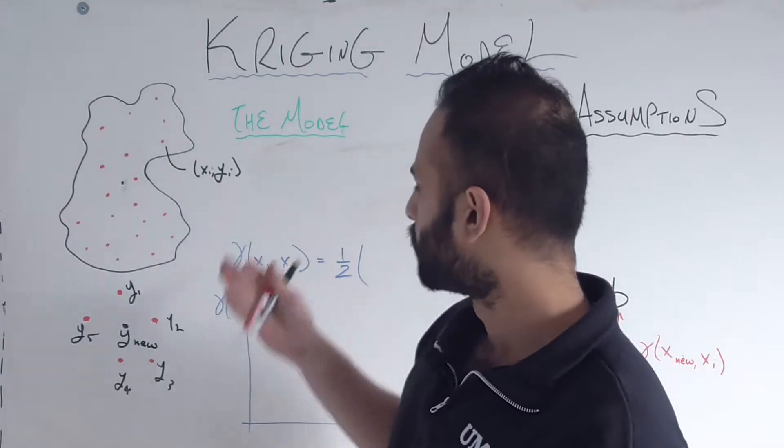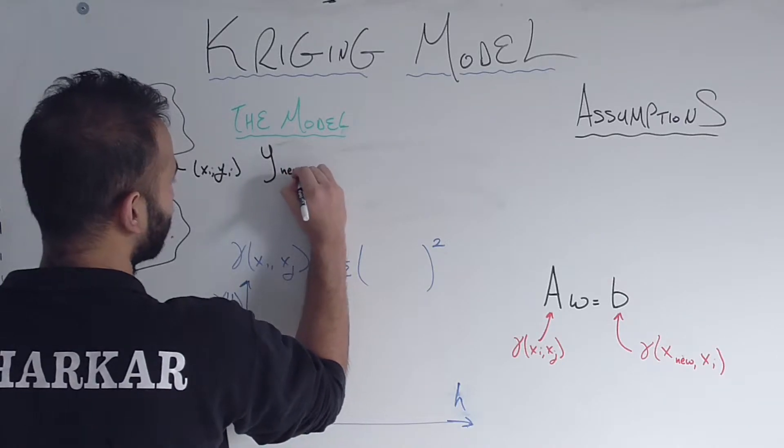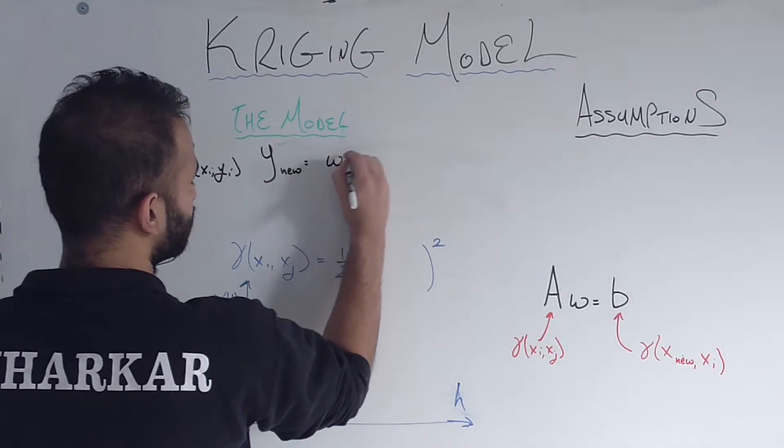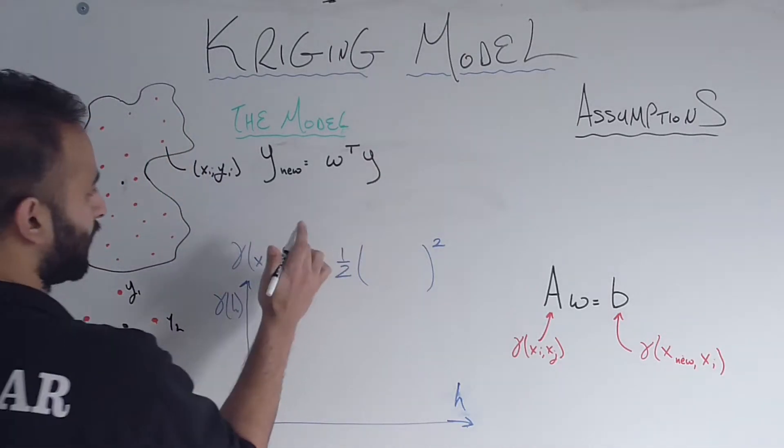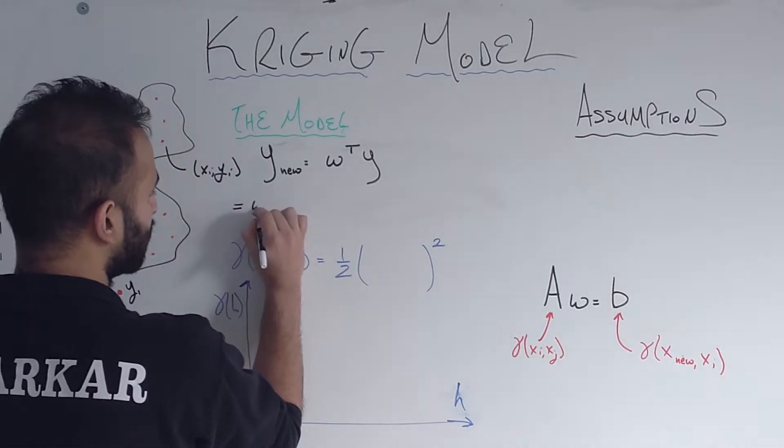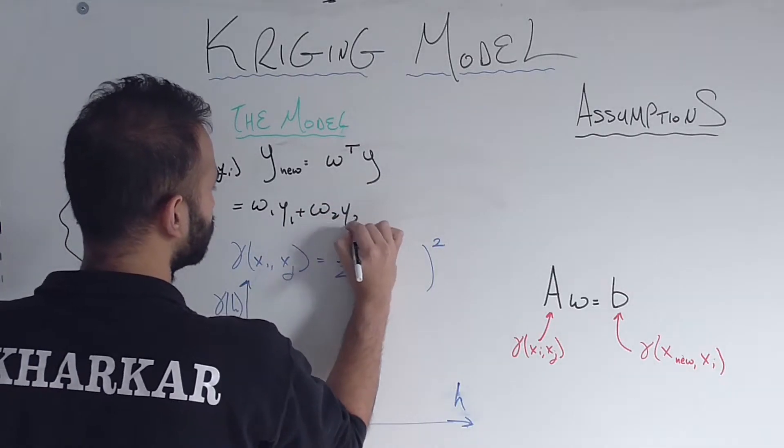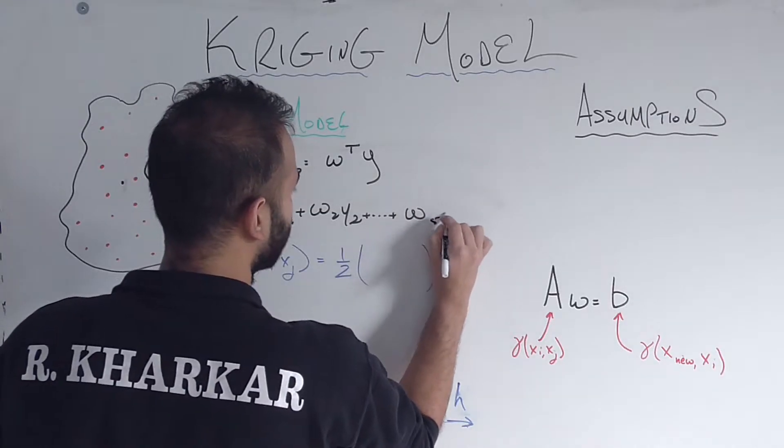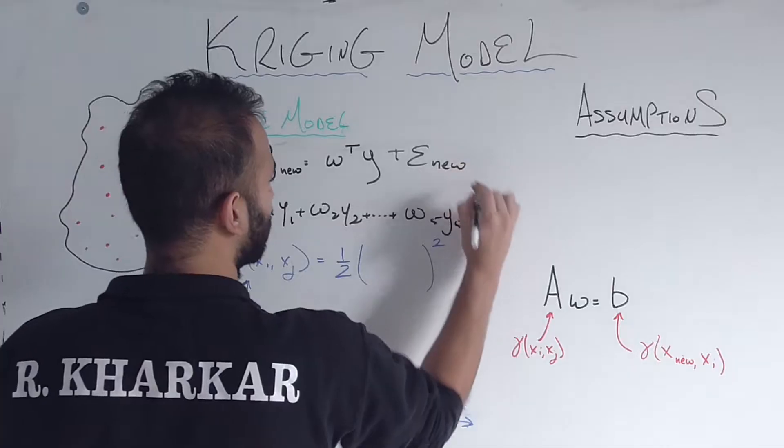So let me go ahead and write the model out now. We're going to say that Y new, which is the elevation at the unknown point, is going to be W transpose Y. That's the matrix form, but if I want to write it out fully it's going to be W1 Y1 plus W2 Y2 plus dot dot dot plus W5 Y5, and the part I left out was the error epsilon nu.